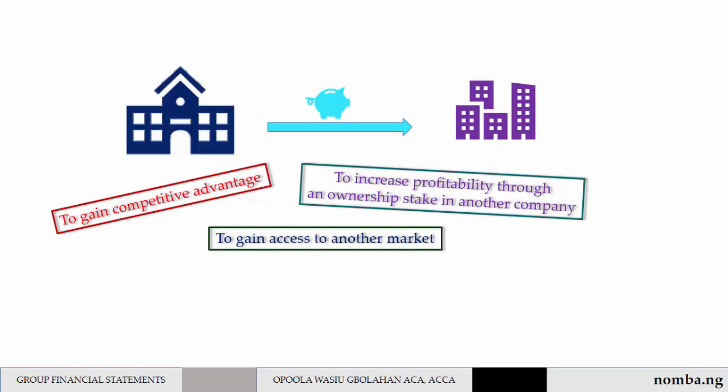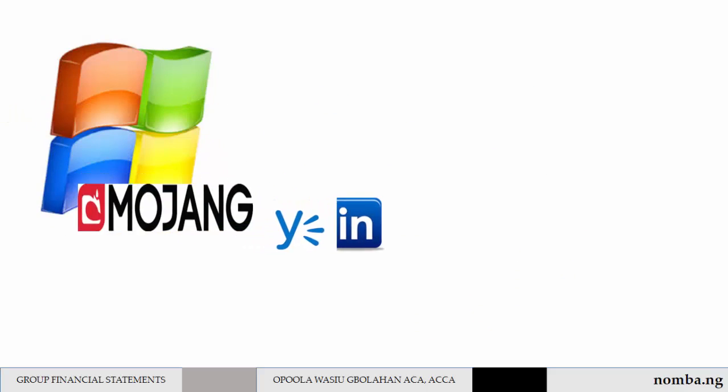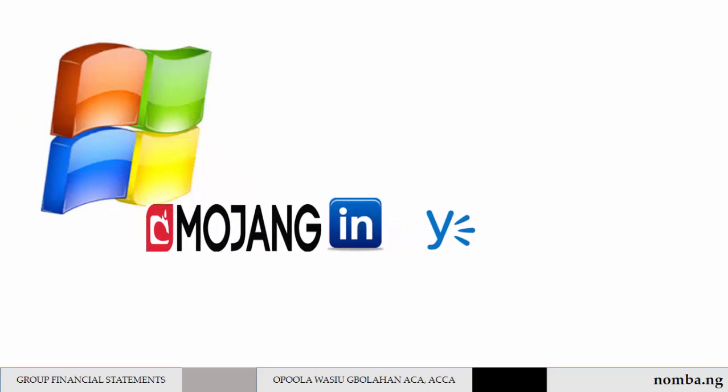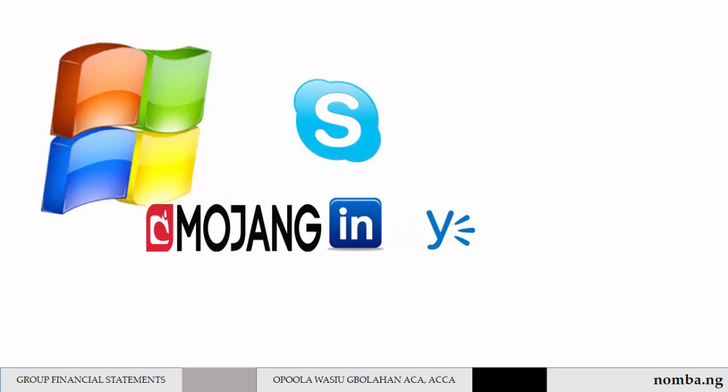Other reasons include gaining access to another market or increasing the asset base. Examples of popular intercorporate investments are Microsoft's acquisitions of LinkedIn, Yammer, Mojang, Skype, and Nokia, and so on.